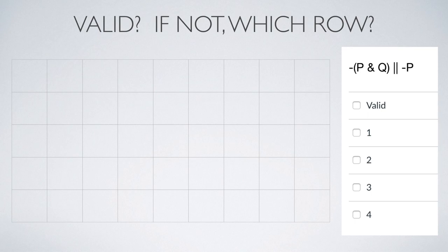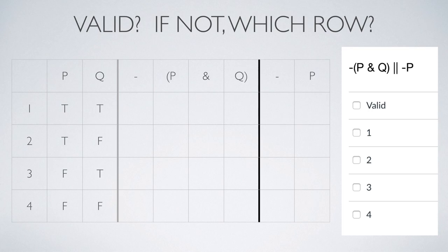Here we have our sequent: it is not the case that P and Q, therefore not P. By rule 5, we've got two variables, so we've got four rows. By rule 6, we give every possible combination of truth values. Then we put in our formula. Notice we've got that solid dark line between the premise — in this case it's only one premise — and the conclusion. By rule 7, we copy and paste our truth values from P and Q over, first to P, now to Q.